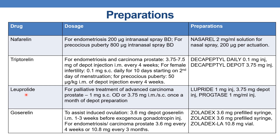The next drug is leuprolide. For palliative treatment of advanced carcinoma of prostate: 1 mg subcutaneously once daily, or 3.75 mg intramuscular or subcutaneous once a month as depot preparation. Marketed preparations are Leuprolide 1 mg injection, 3.75 mg depot injection, and Prostap 1 mg per ml injection.